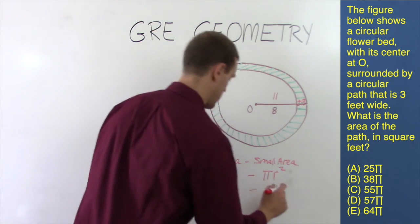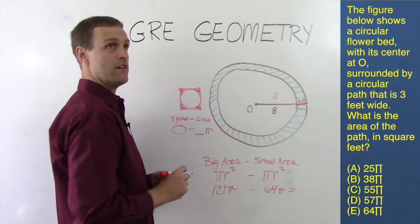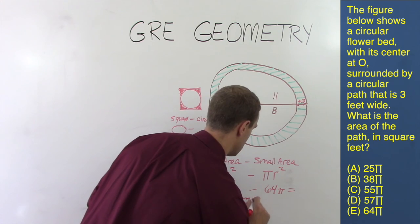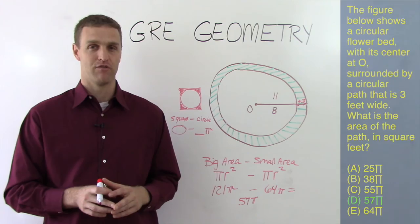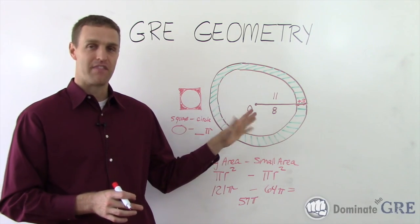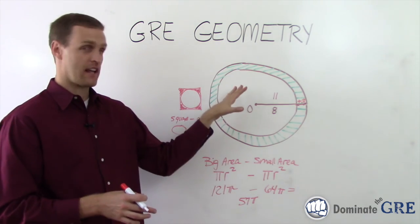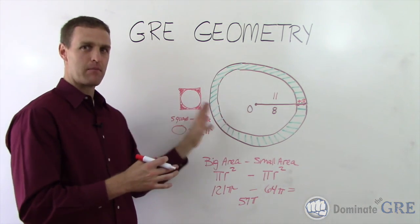So we have 121 pi minus 64 pi. And 121 minus 64 is going to be 57. That equals 57 pi. Answer choice D. You check it and you move on. Leftovers. That's the idea for finding the area of a shaded region. It could look like something like this. It could be a circle inscribed in a square. It's just something minus something else.